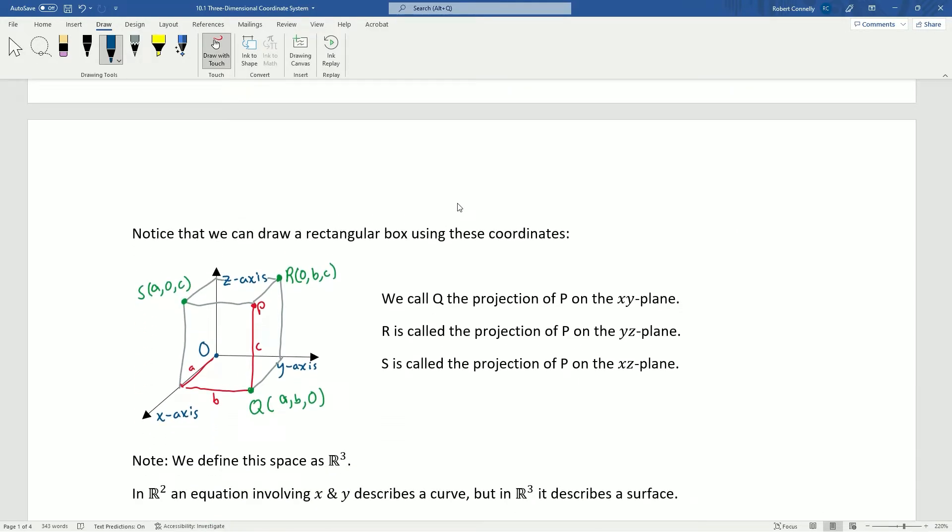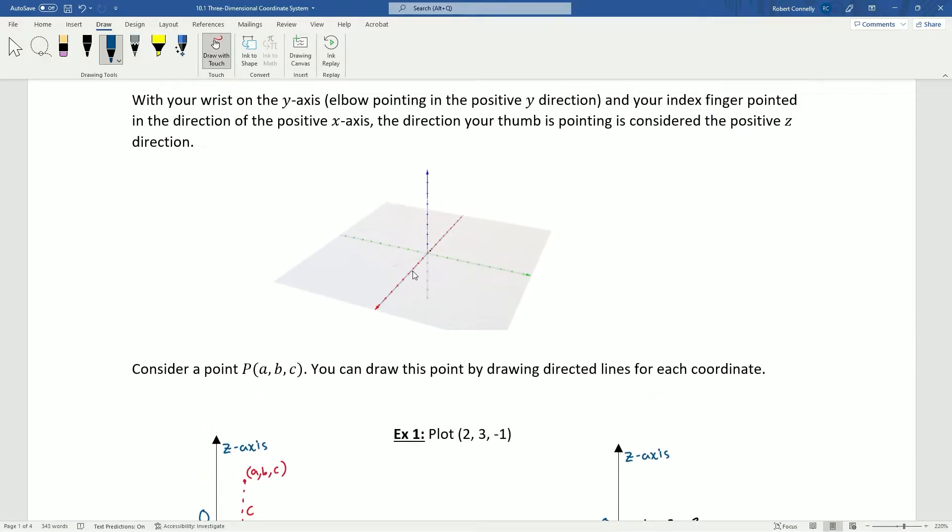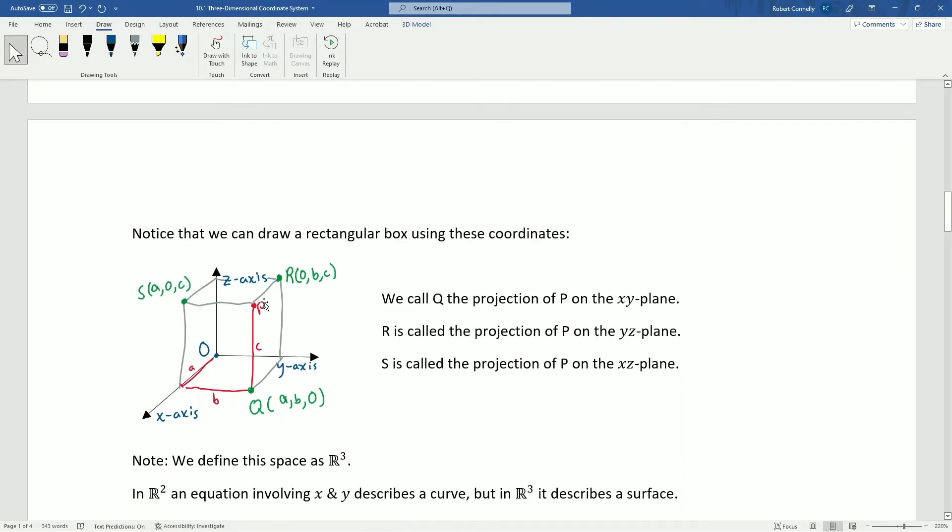So let's move on and consider something else here. So notice that if you have a coordinate P, a point P, that you can draw a rectangular box using our coordinate system. So imagine you took this point B and you just drew a line straight down to the XY plane here. So we'll go back to that 3D model for a moment. So you've got some point floating up here in space, right? If you were to draw a straight line down and just land it on this XY axis, that vertical line will be parallel to the Z axis. So any line you dropped straight down from a point.